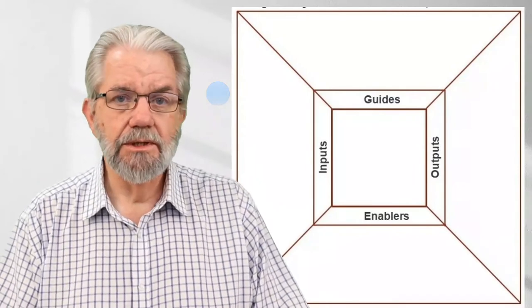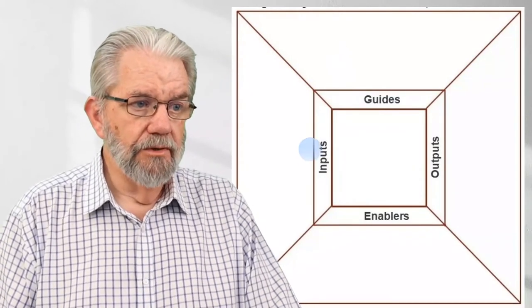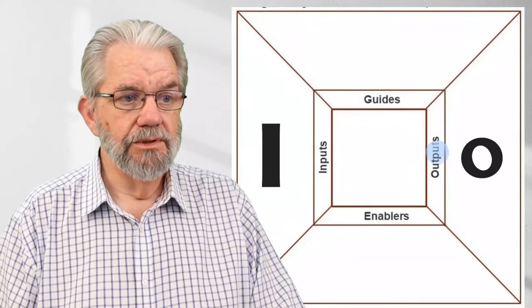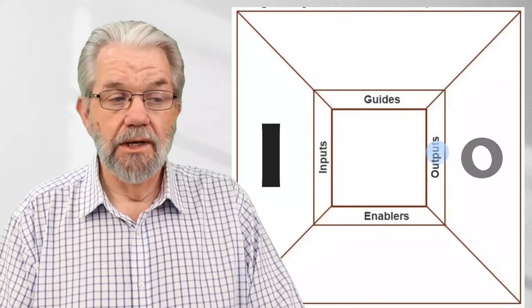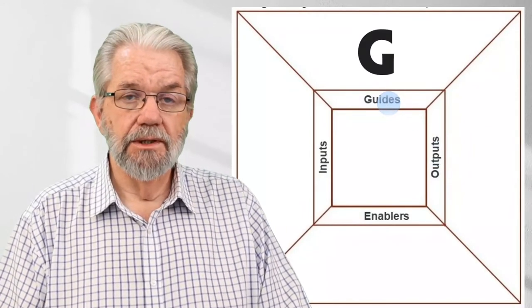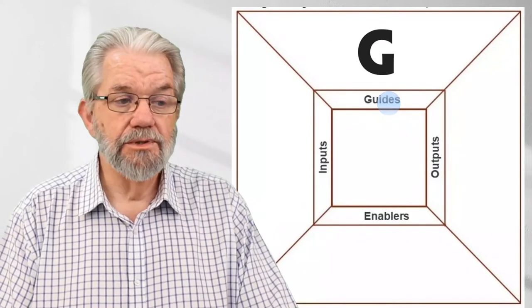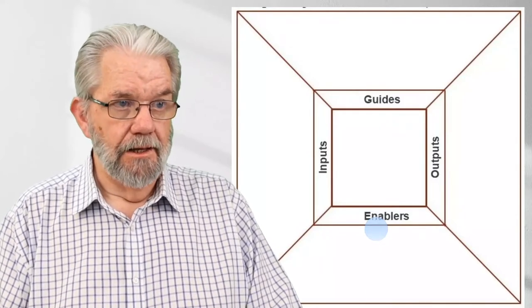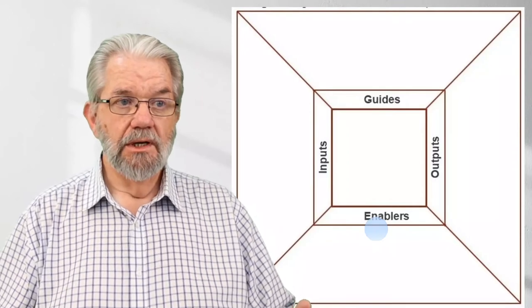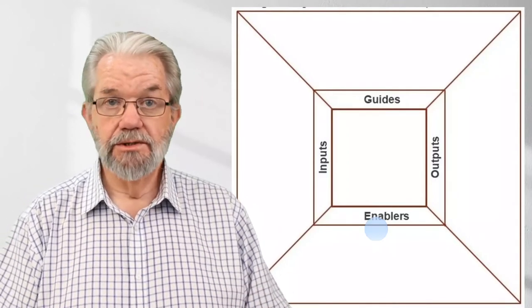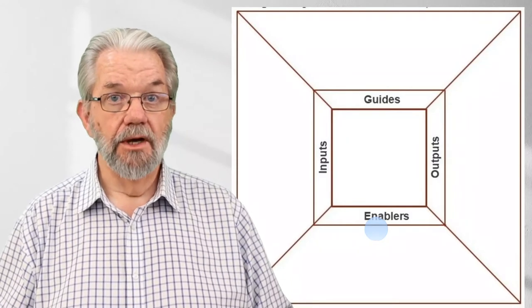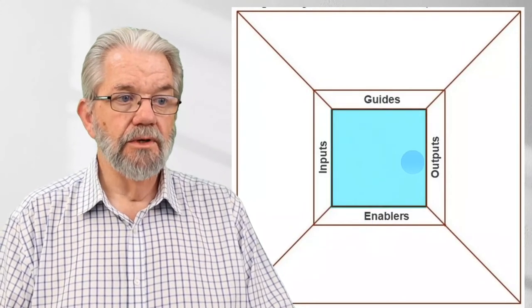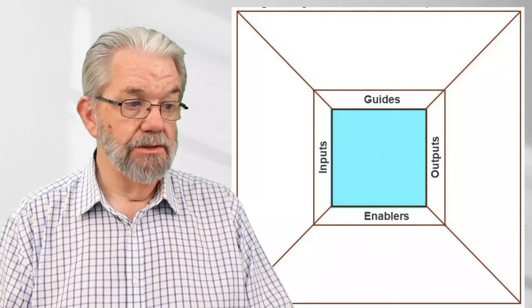There are about six areas of the diagram to comment on. Firstly, we've got inputs and outputs — inputs to the process, outputs from the process. Inputs are changed or transformed in some way into outputs. Guides tell us how to make that transformation, and enablers make it happen. Everything inside the large outer box is within the process; everything outside is outside the process — the context piece.